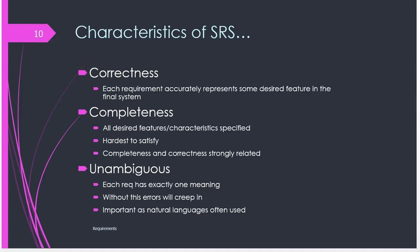An SRS should also be complete — all the desired features and characteristics should be featured in the document, meaning every requirement should be fully met by features that have been created in the system. The SRS should also be unambiguous — each requirement has exactly one meaning. This helps us avoid errors that may come as a result of different translations of requirements. Every requirement should have one meaning, leading to only one translation and one solution, whereas ambiguous requirements can be interpreted in different ways, introducing errors into the system.